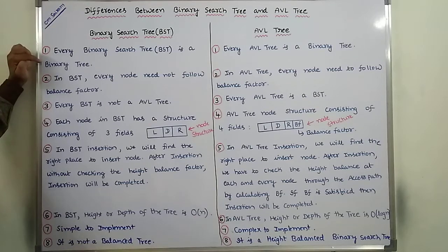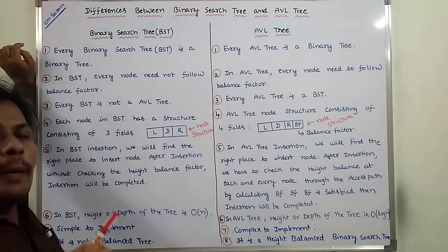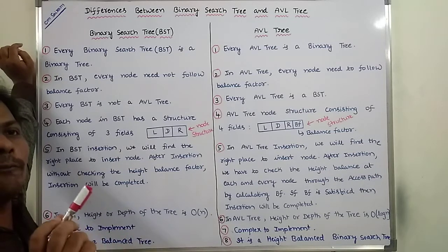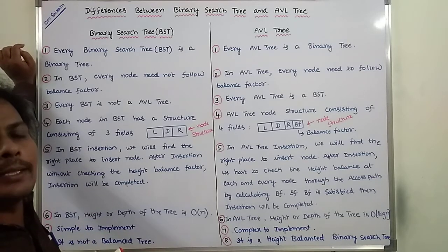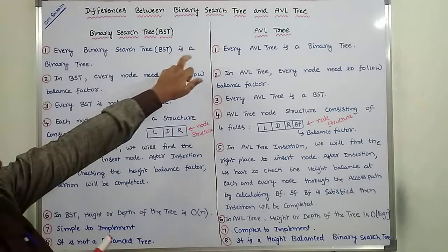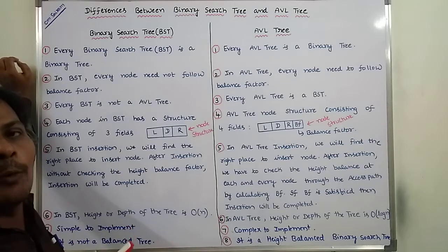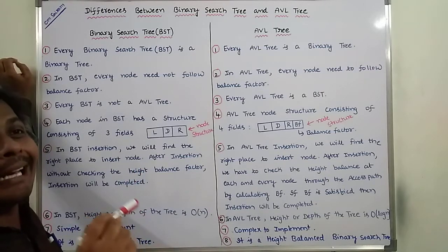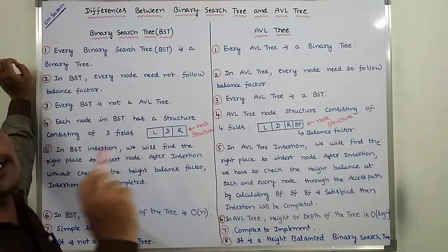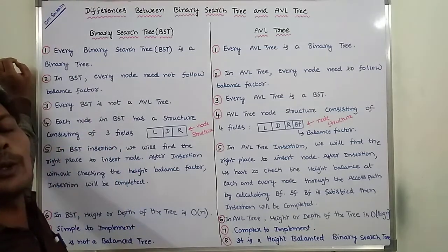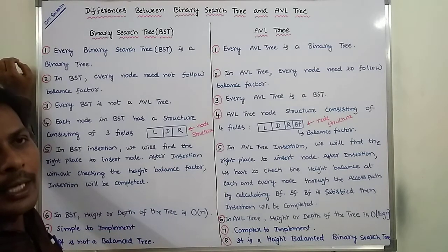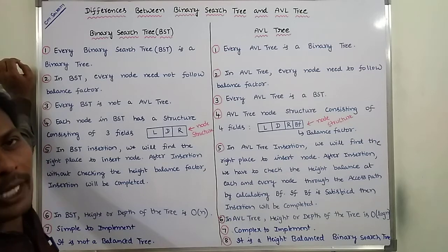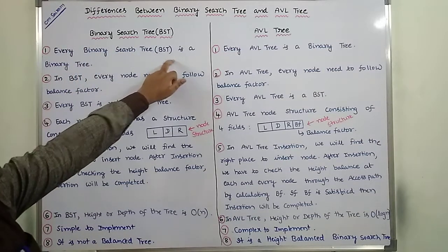First point: every binary search tree is a binary tree. According to the binary tree definition, each and every node has at most either 0, 1, or 2 children. In the case of binary search tree, we have to follow the BST property — node values less than the root are on the left subtree, and node values greater than the root are on the right subtree. This property is present in BST but not required in a plain binary tree. Hence, every binary search tree is a binary tree.